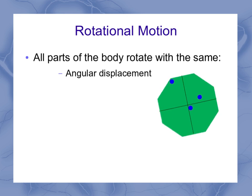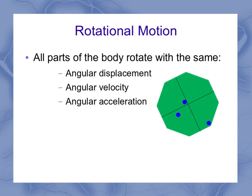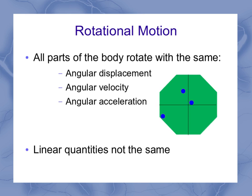As it starts to rotate, each point on the circle is moving with the same angular displacement, velocity, and acceleration. But the linear quantities are not the same.